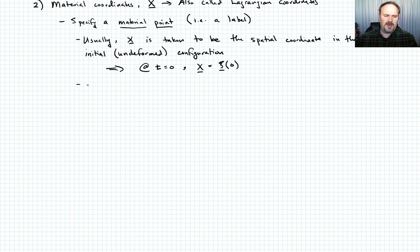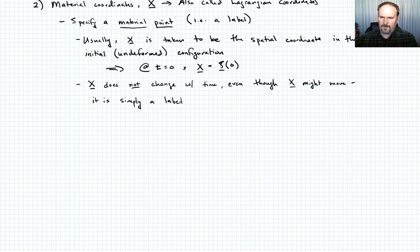Something else to point out is that the spatial coordinates vary in time, but the material point doesn't change in time. Its label doesn't change in time. It moves around in space, but its label remains the same. So X does not change with time, even though the material point moves. Remember, it's simply a label.